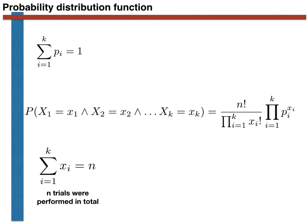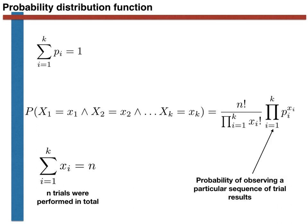The derivation of this expression follows that of the binomial distribution. The product term is simply the probability that a particular sequence of trial results is observed. For instance, if we performed four trials each with three possible outcomes and wanted the probability of the sequence 3, 1, 1, 2, we would multiply p3 by p1 by p1 by p2 — that is, p3 times p1 squared times p2 — exactly as the product term tells us.